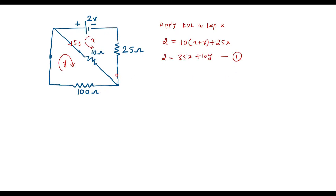Now applying KVL to loop Y. Here there is no voltage source. So 0 equals — starting from any resistor — the voltage across the 10 ohm resistor, which is 10 times (X plus Y), plus the voltage across the 100 ohm resistor, which is 100Y. Simplifying: 10X plus 10Y plus 100Y.